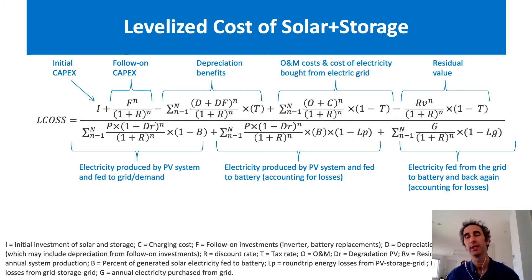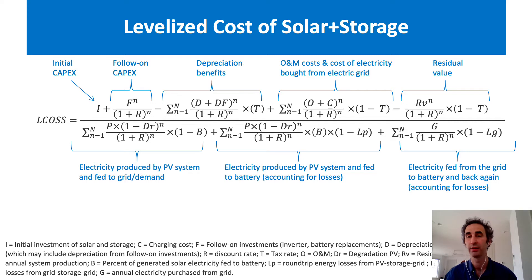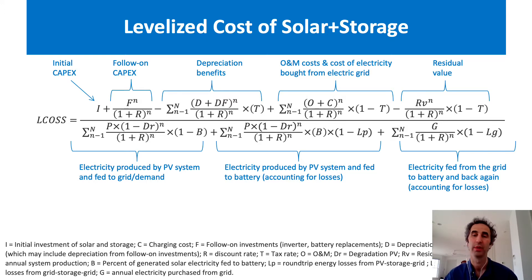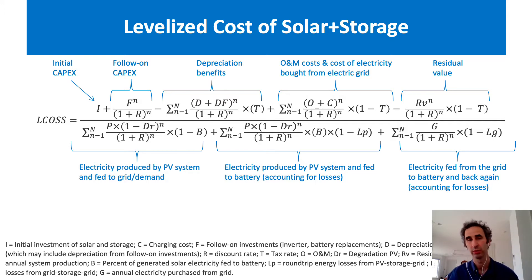And finally, we have any electricity that's fed from the battery back to the grid or demand source, obviously accounting for those losses, which may differ from the other losses we mentioned. It's also important to remember that all of these are discounted.